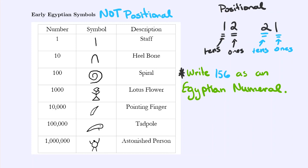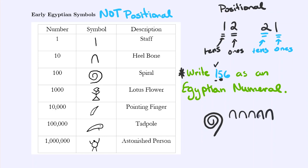Okay, great. So we're going to write 156. Starting with the largest number, we need to account for one 100. These symbols will be provided on any exam, so you don't have to worry about memorizing them. We see it's this spiral. So I write the spiral for 100. Then I need to write five 10s, so I'm going to have five of these heel bones because each one is 10. With the Egyptian symbols, sometimes they stack just for space. Then we need six ones. So I have six ones, and this represents 156 in the Egyptian numeral system.